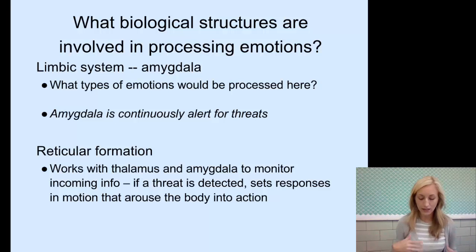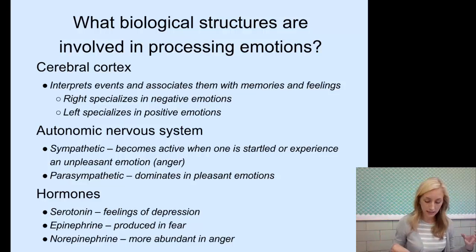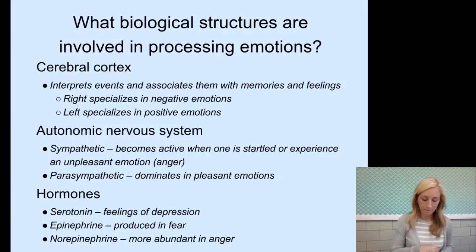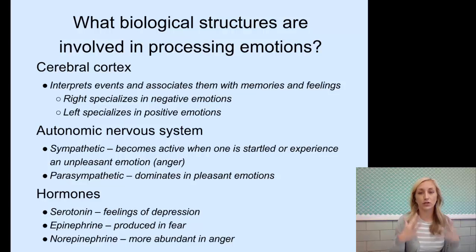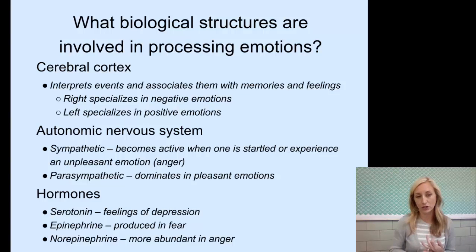The cascade of responses arouses the brain, causes the heart to accelerate, increases respiration, and causes muscles to become tense. The cerebral cortex interprets events and associates them with memories and feelings — the right hemisphere specializing in negative emotions, the left in positive emotions. It's good to know that hemispheric difference. The autonomic nervous system: the sympathetic becomes active when one is startled or experiences an unpleasant emotion like anger, getting you ready for fight or flight, while the parasympathetic dominates in pleasant emotions, helping you feel at homeostasis.